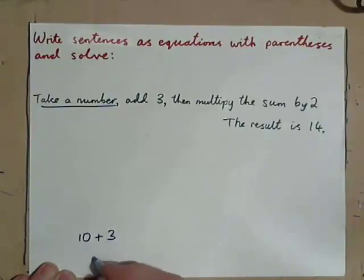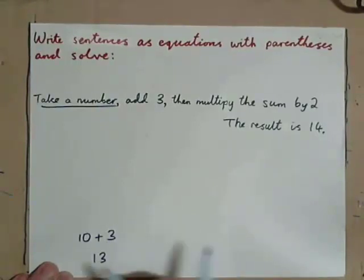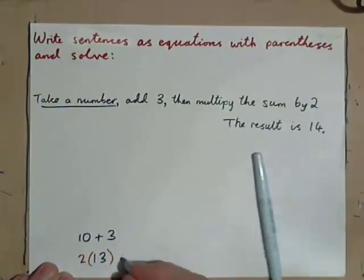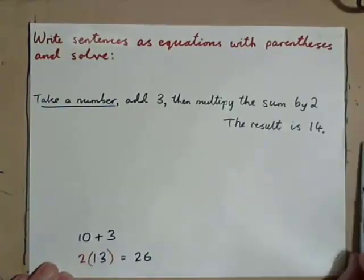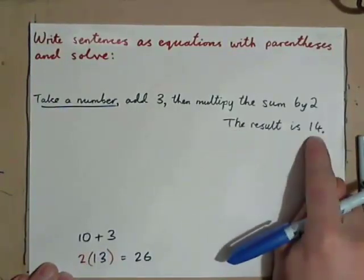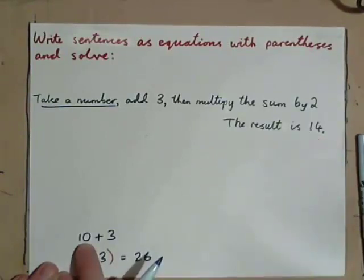So, that's the sum, 13. Multiply that by 2, 2 times that, and we get 26. Then, it says the result is 14. So, obviously, the number isn't 10. That doesn't work.